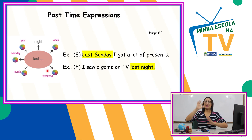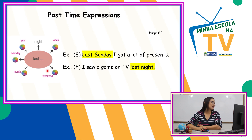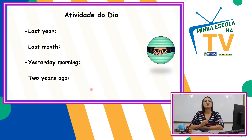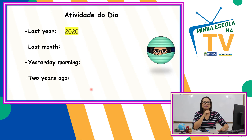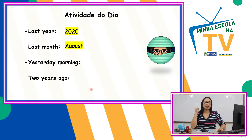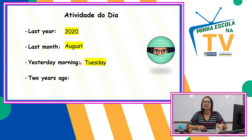Se eu quero falar ano passado: last year. Segunda-feira passada: last Monday. Last month: mês passado. Numa pequena atividade: last year significa ano passado — foi 2020. Last month — mês passado — foi agosto. Yesterday morning — ontem de manhã — foi Tuesday, terça-feira, com letra maiúscula. Nomes de dias da semana em inglês levam letra maiúscula.